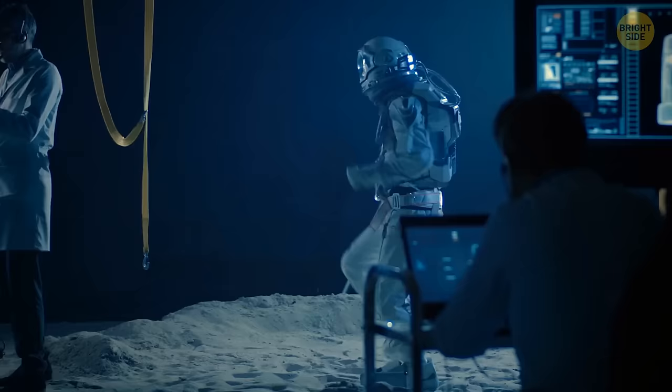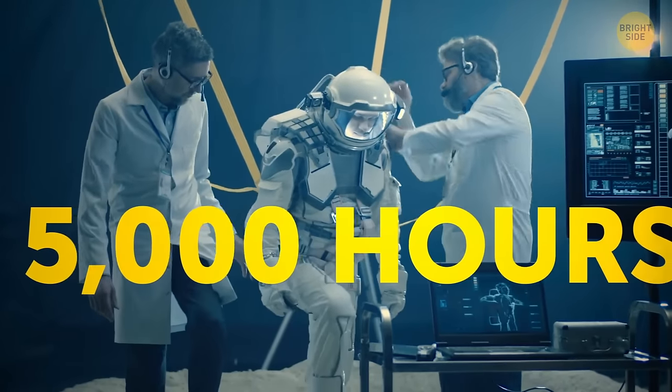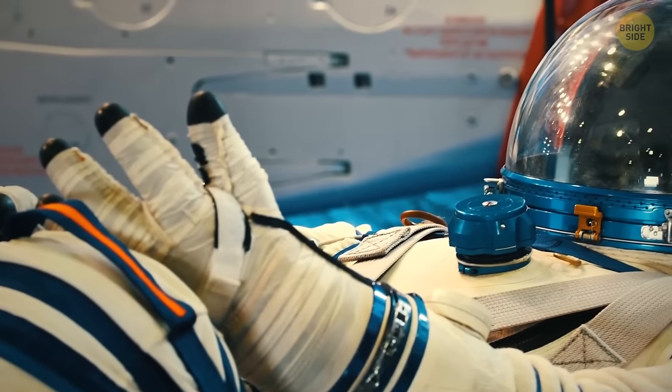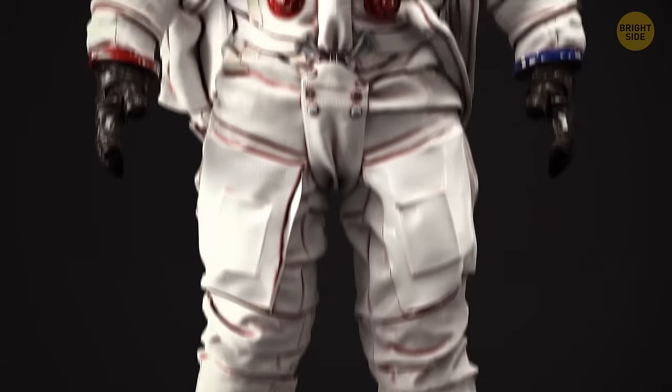If you want to build a spacesuit, get ready to work really hard. It takes 5,000 hours to make it, and will cost you a million dollars. A really good one will have 11 layers of material, and weighs about 110 pounds. And it needs to be comfortable. You'll need more space in there, because you grow up to 2 inches when in space.